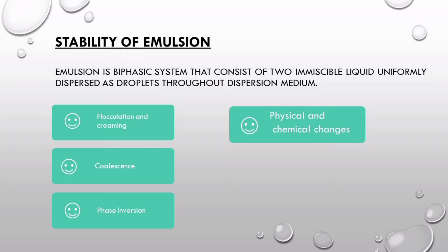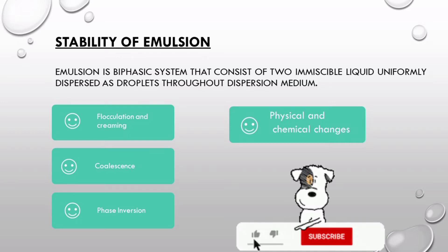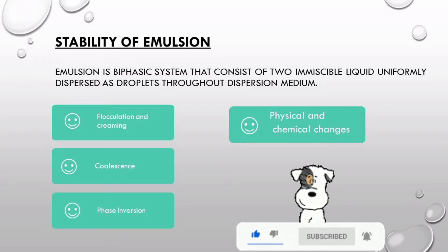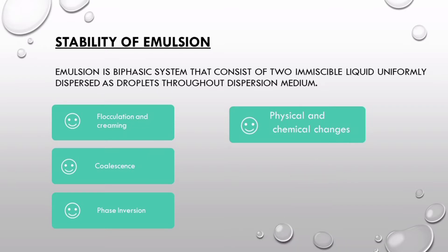The processes or steps in instability of emulsion refer to the mechanisms which make emulsion unstable or unfit for pharmaceutical and medicinal uses. First is flocculation and creaming, second is coalescence and breaking, third is phase inversion, and the rest are physical and chemical changes.